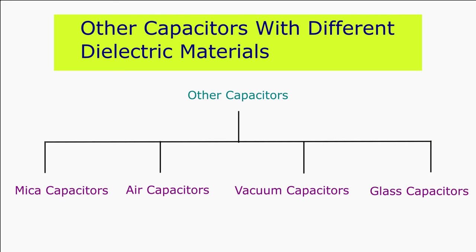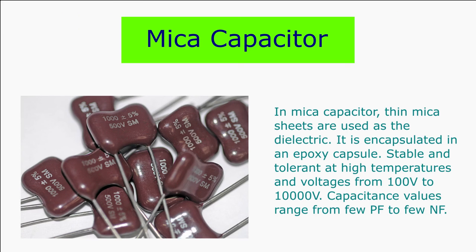Other capacitors are categorized depending on the type of dielectric material used, including mica capacitors, air capacitors, vacuum capacitors, glass capacitors, etc. Mica capacitors are made of mica sheets as the dielectric, where thin metal sheets are layered with mica sheets in between. Leads are taken from the metal sheets and encapsulated in a Bakelite capsule. These capacitors are extremely reliable, stable, and tolerant to high temperatures and voltages. Mica capacitors have a capacitance range of 50 pF to 500 pF and high working voltages of 500 volts to 2000 volts.